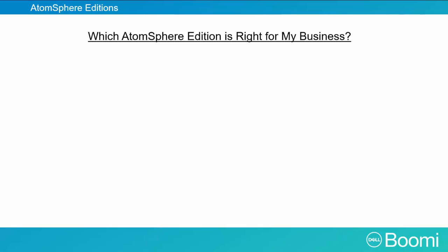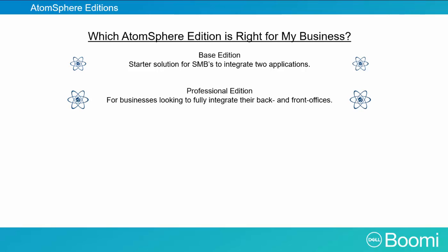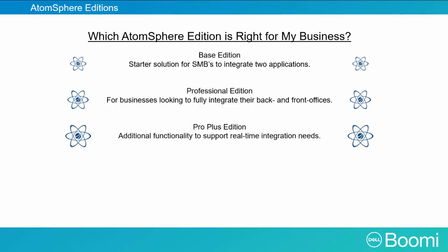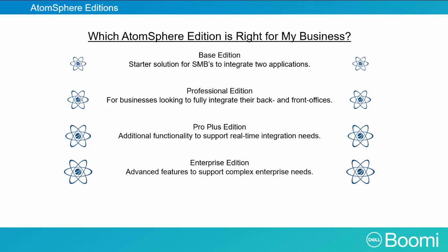Here is a list of packages we offer. The Base Edition is a starter solution to integrate two applications. The Professional Edition is for businesses looking to fully integrate their back and front offices. The Pro Support Edition offers additional functionality to support real-time integrations. Our Enterprise Edition has advanced features to support complex enterprise needs.